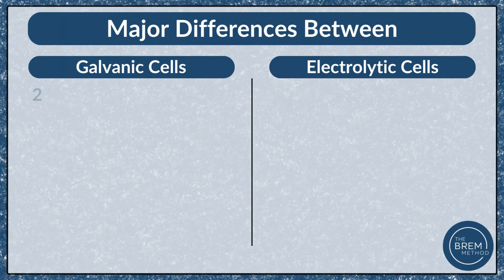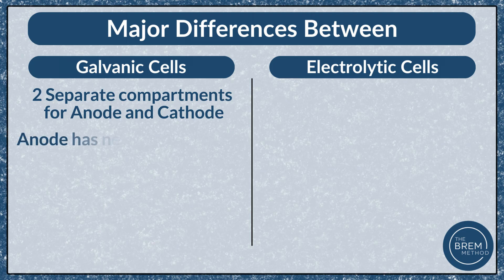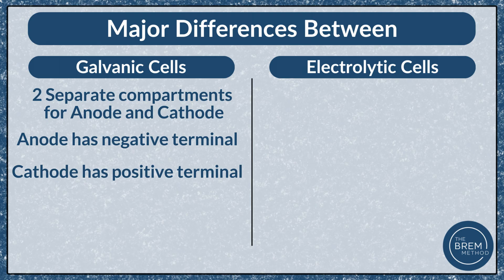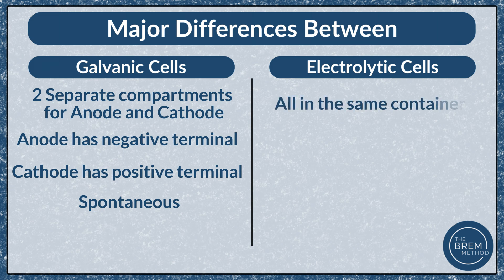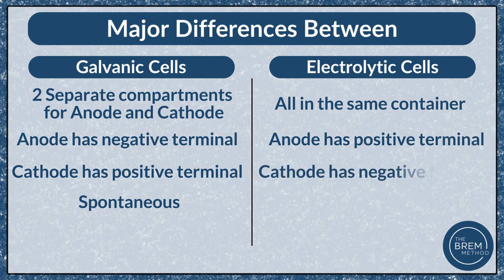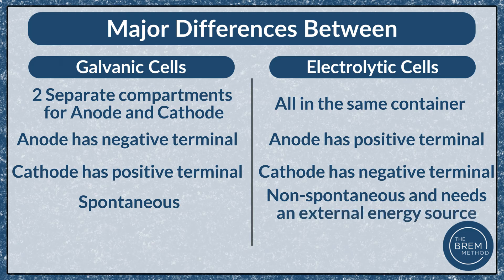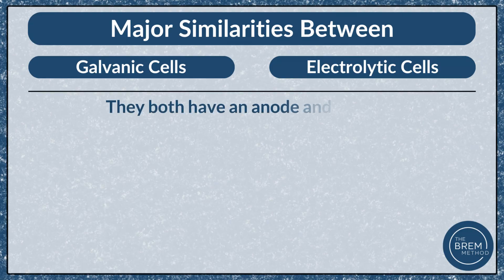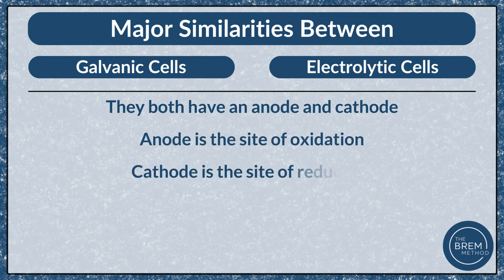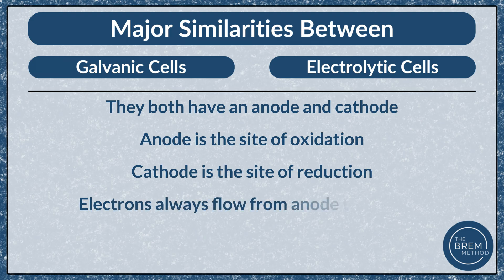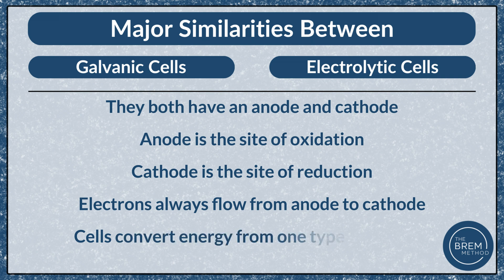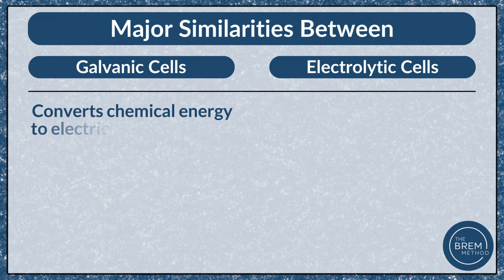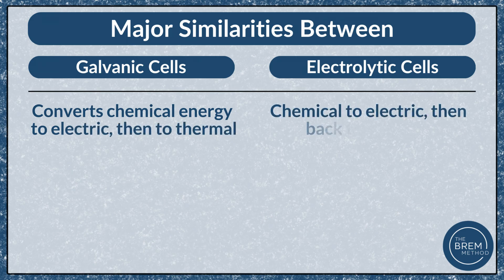To recap the differences: a galvanic cell has two separate compartments, the anode has a negative terminal, the cathode has a positive terminal, and it is spontaneous. An electrolytic cell uses one container, the anode has a positive terminal, the cathode has a negative terminal, and it is non-spontaneous — it requires an external energy source. The similarities: both have an anode and cathode, oxidation always at the anode and reduction at the cathode, electrons always flow from anode to cathode. Galvanic cells convert chemical energy to electrical then thermal; electrolytic cells convert electrical energy back to chemical.